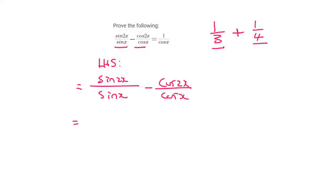Now your common denominator is going to be sin x cos x. So that means this one is going to be multiplied by cos x, and that's all going to be over the common denominator.